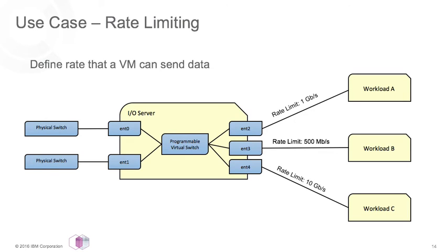The last feature demonstrated in this tech preview is rate limiting. Our tech preview allows you to define QoS policies that can be dynamically added to a workload and define how fast you will allow traffic to be sent from your workload. This can be useful if you want to limit development workloads from potentially interfering with more important workloads running on those same systems. This is enforced down in the hypervisor, specifically on the PowerVM NovaLink partition.